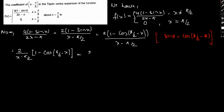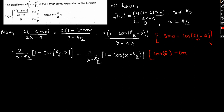If we further take x - π/2, this becomes 2 / (x - π/2) times (1 - cos(x - π/2)). We basically use the property cos θ = cos(-θ) here.